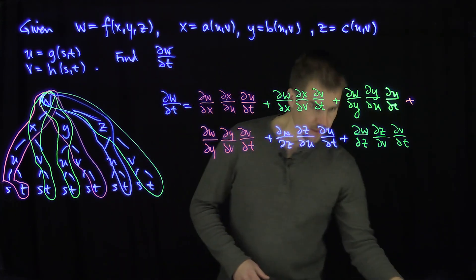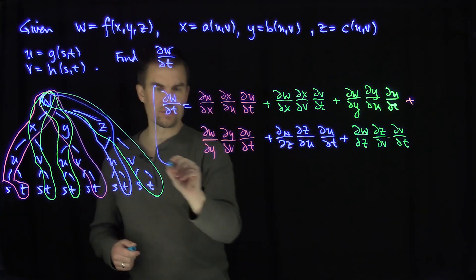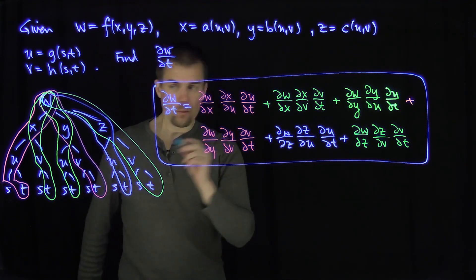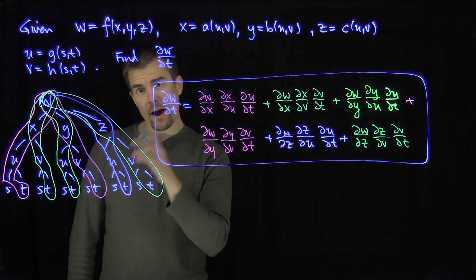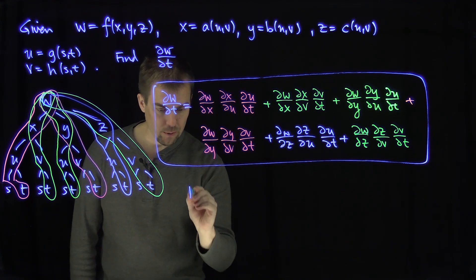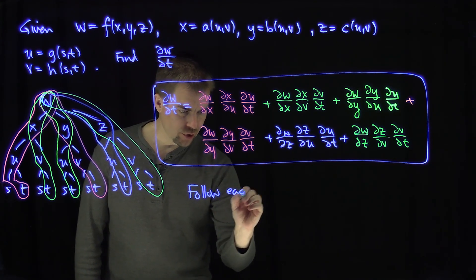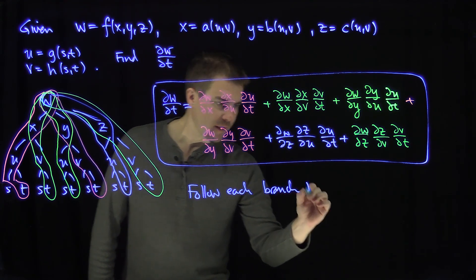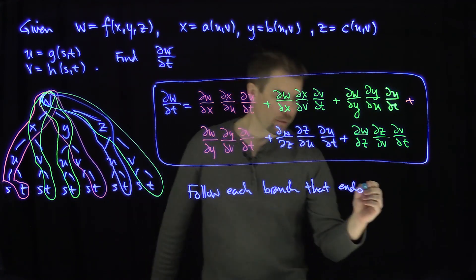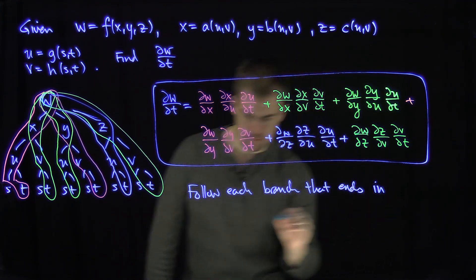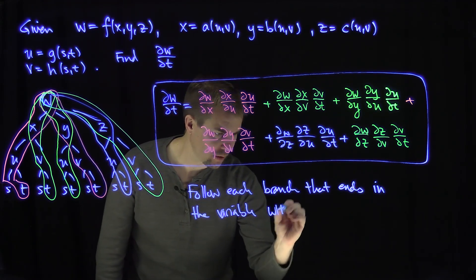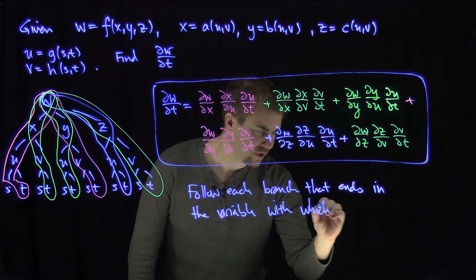So this is our expression for partial w / partial t — it is those six terms, because there are six ways w can depend on t. The important thing is that with these tree diagrams, we follow every branch until we see the variable at the very bottom. The objective is that we always follow each branch that ends in the variable with respect to which you are differentiating.